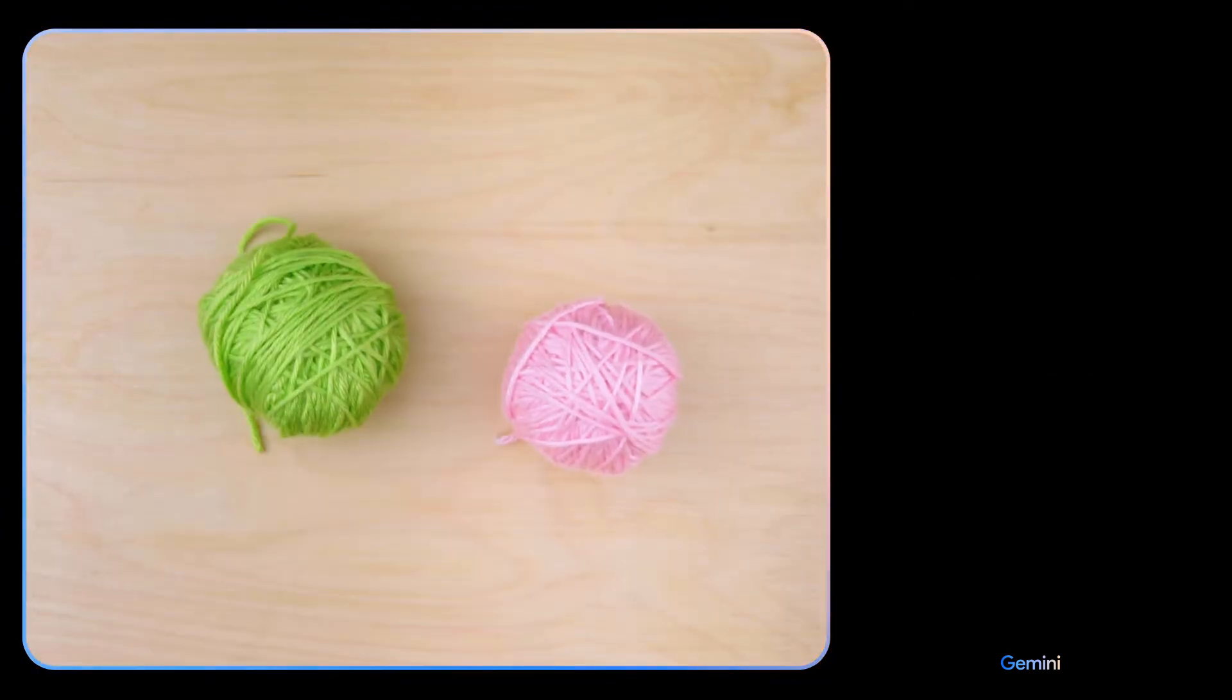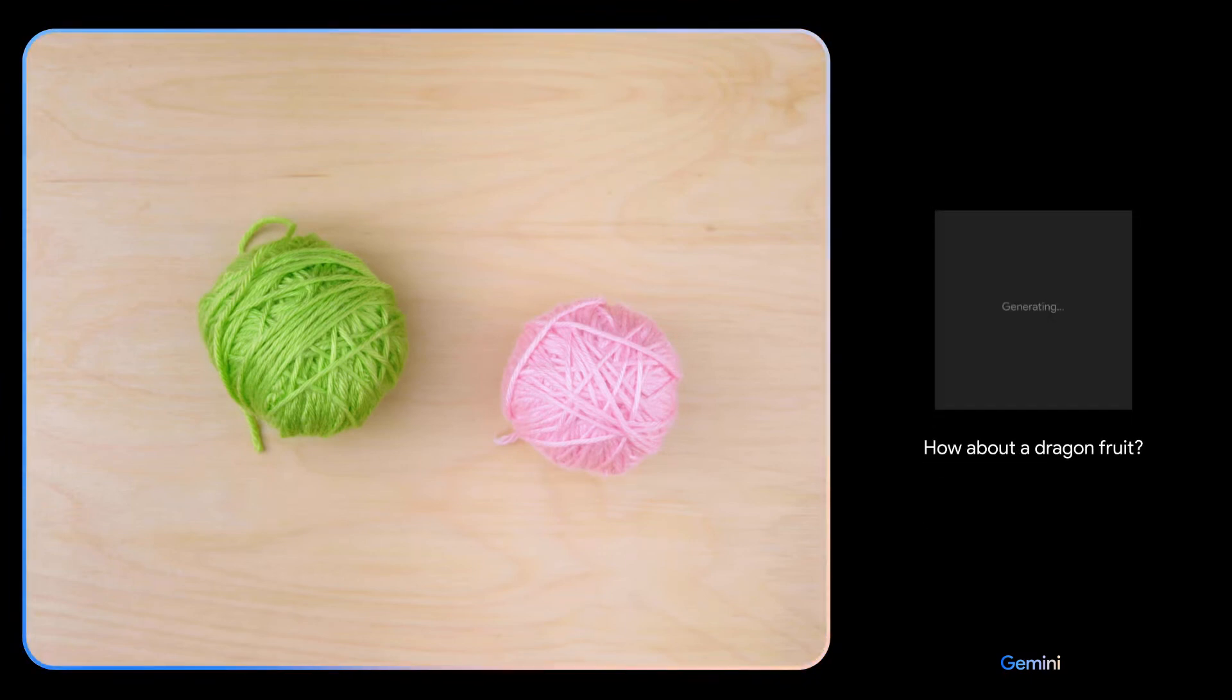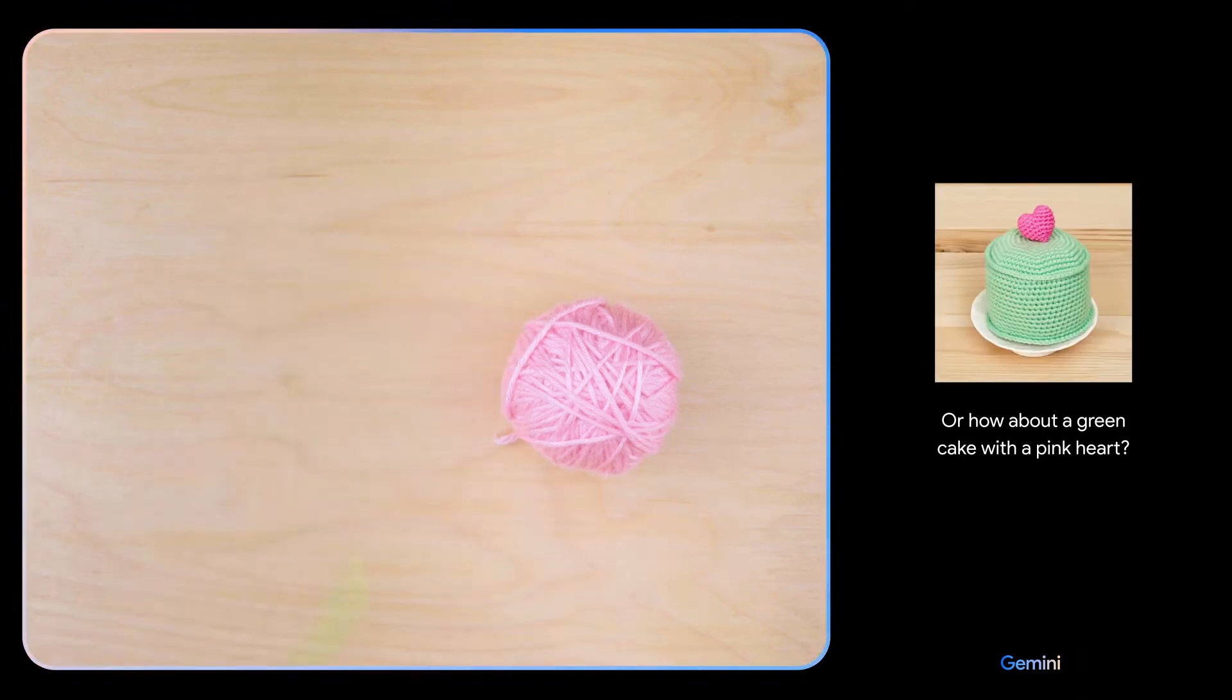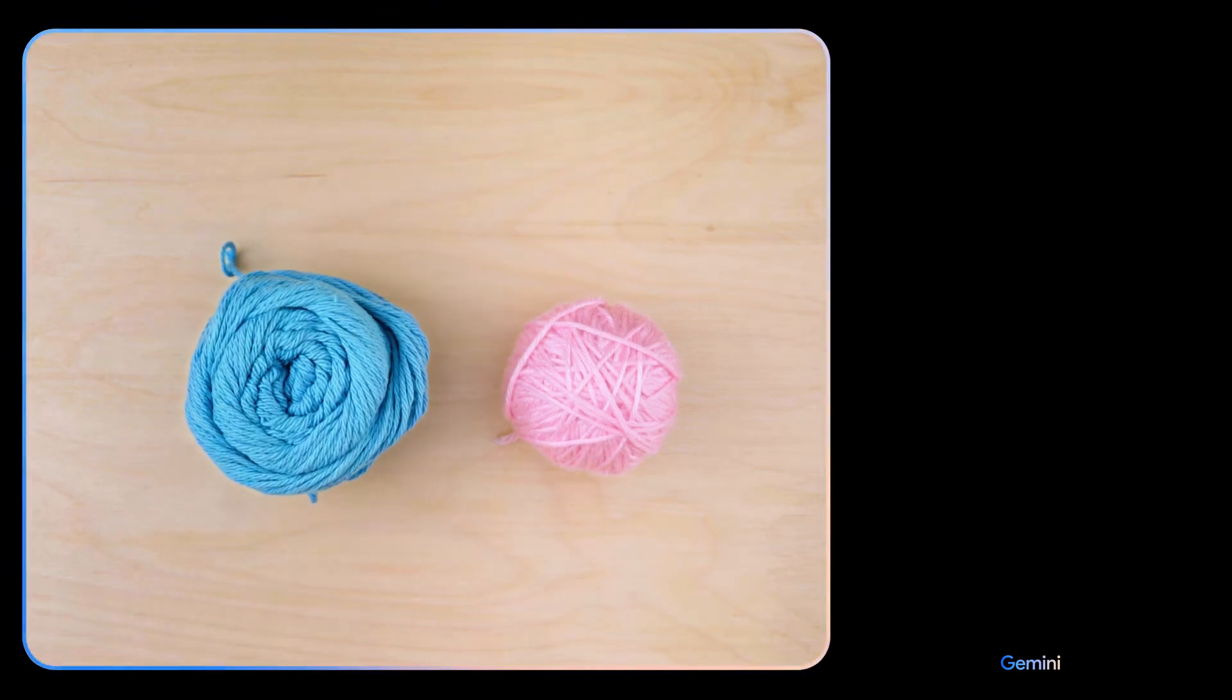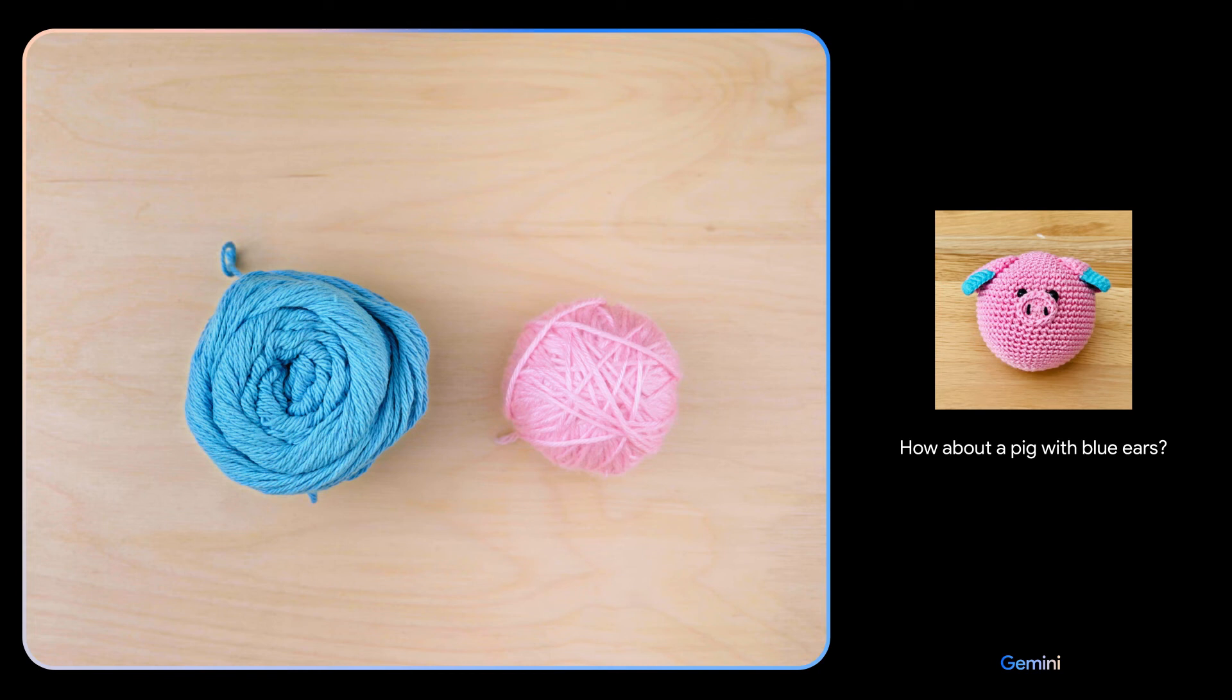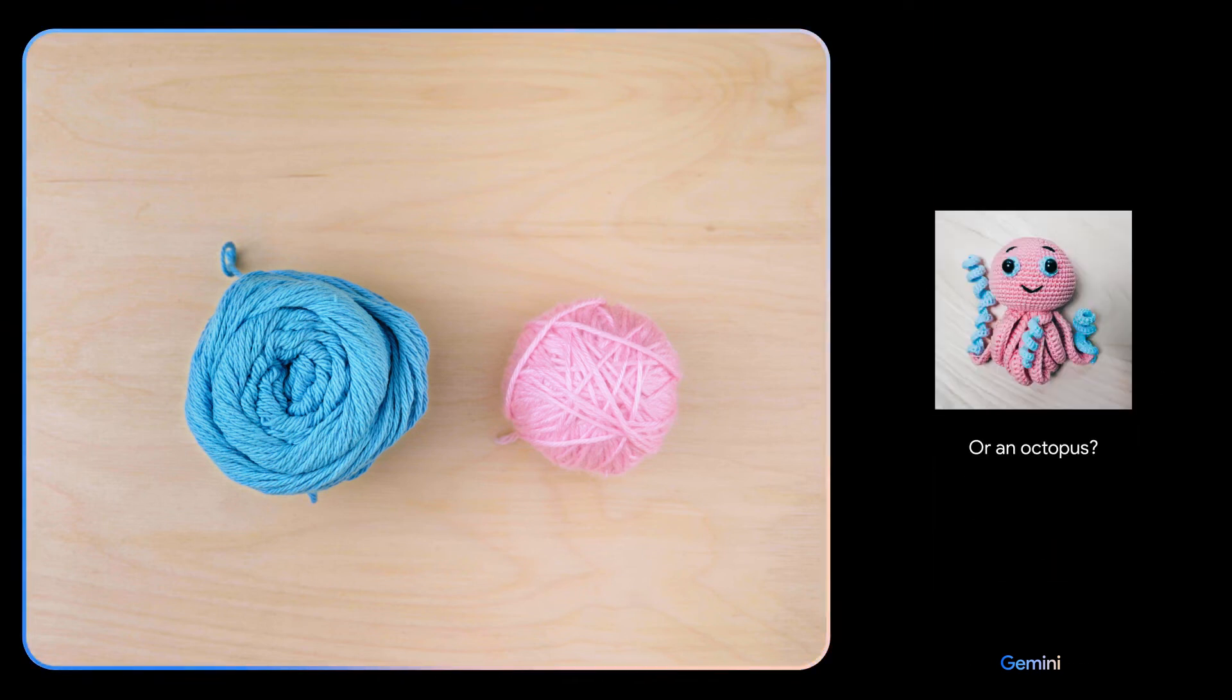Give me some ideas for what I could make with this. I see pink and green yarn. How about a dragon fruit? Or how about a green cake with a pink heart? Okay, how about these colors and maybe show me some animals. Okay now I see blue and pink yarn. How about a pig with blue ears or an octopus or a bunny with a pink nose? Oh I'll keep those in mind.